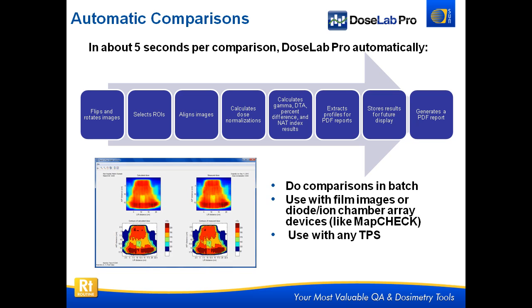Another nice thing is that we can actually do comparisons in batch. If we do one comparison automatically in five seconds and we have an 11-field IMRT QA, we can put all 11 fields in there, do them all one by one in batch, and be done in about one minute with a PDF report ready to import to our R&V system. This works with film, MapCHECK, matrix, and PTW-729 — really just about any way you can measure dose is compatible with DoseLab.